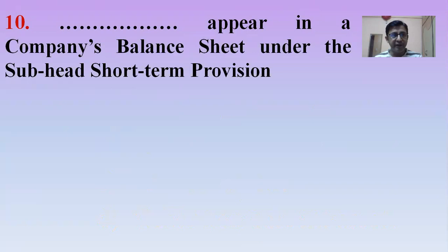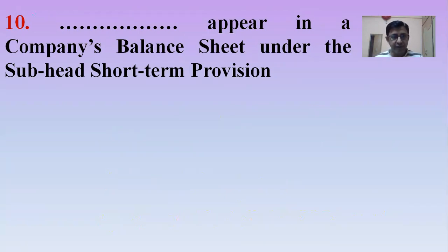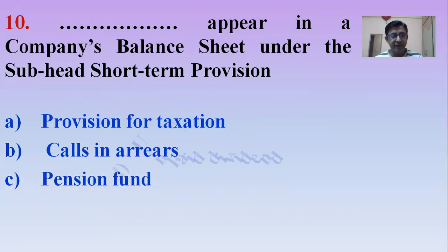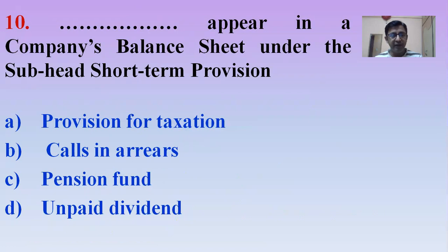Next MCQ: Which item appears in a company's balance sheet under the subhead called Short-term provisions? Options: Provision for taxation, Calls in arrears, Pension fund, or Unpaid dividend. The right answer is Option A — Provision for taxation is recorded as a short-term provision.